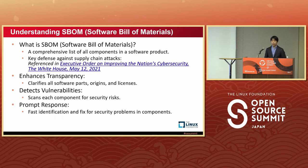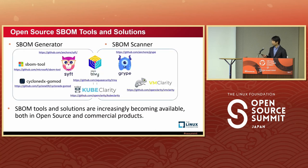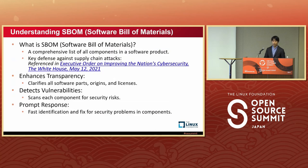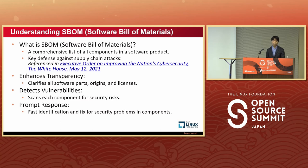An SBOM, or software bill of materials, is a comprehensive list of all components in software products. It is considered a key defense against supply chain attacks. This importance is mentioned in the executive order by President Biden. About SBOM's benefits: it enhances transparency by clarifying software parts, origins, and their licenses. It detects vulnerabilities by scanning each component for risk. And it helps prompt response with fast identification and fix for security problems in components.